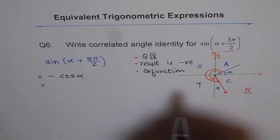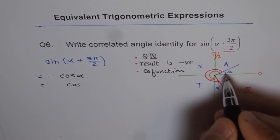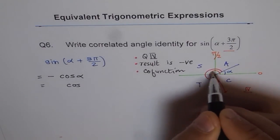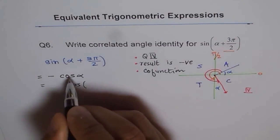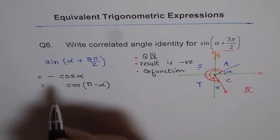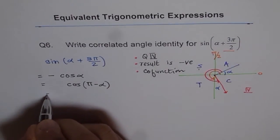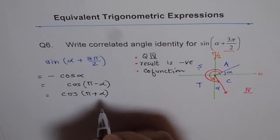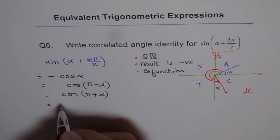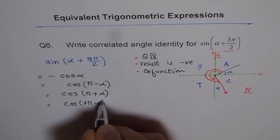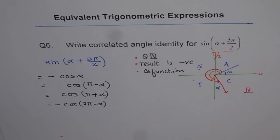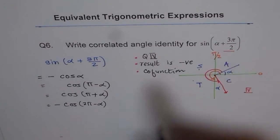Now, we can write cos alpha using other identities. Think starting from alpha angle. We could write this as pi minus alpha or pi plus alpha. If I do cos of pi minus alpha, I land in quadrant 2 where cosine is negative, so I don't need an extra negative sign. Or if I write cos of pi plus alpha, we land in quadrant 3 — so no extra negative needed. But if I write cos of 2 pi minus alpha, we land in quadrant 4 where cosine is positive, so I have to write a negative. These are the correlated angle identities of sine alpha plus 3 pi by 2 in terms of cosine.